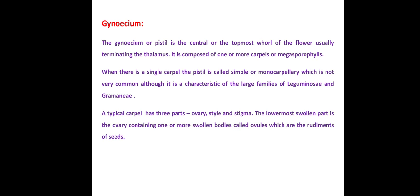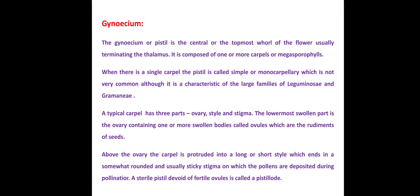A typical carpel has three parts: ovary which is the basal one, style which is the middle one, and stigma which is the top one. The lower swollen part is the ovary, containing one or more ovules which are the rudiments of the seed — after fertilization those ovules develop into a seed. Above the ovary, the carpel protrudes into a long or short style which ends in a somewhat rounded and usually sticky stigma on which the pollens are deposited during pollination.